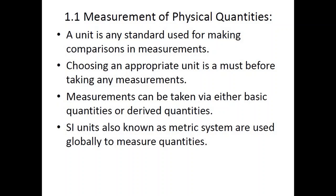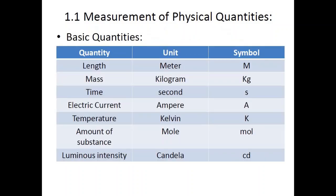Measurements can be taken using basic quantities or derived quantities. The system of units we use is known as the SI unit system — the International System of Units — also known as the metric system. Most countries in today's world use the SI or metric system, whereas the US is probably the only country that still uses the English or imperial units. In the SI system we have base quantities and derived quantities.